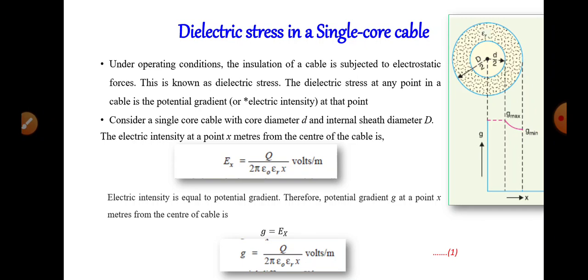Consider this figure having conductor diameter d (small) and internal sheath diameter D (capital). The electric field intensity at a point x from the center of the cable will be: E_x = q / (2π·ε₀·εᵣ·x) volts per meter. This is also the potential gradient, so electric field intensity equals potential gradient. Therefore, potential gradient G = q / (2π·ε₀·εᵣ·x) volts per meter.